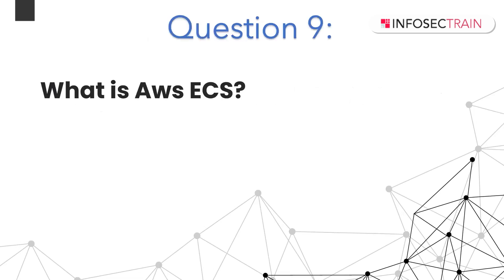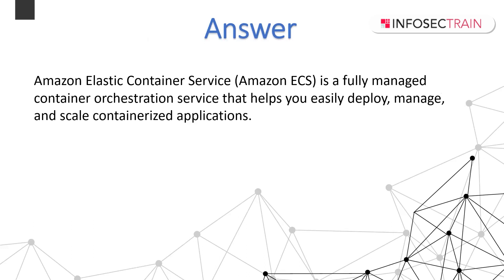What is AWS ECS? ECS stands for Elastic Container Service and it is a fully managed container orchestration service that helps you easily deploy, manage, and scale containerized applications. It deeply integrates with the rest of the AWS platform to provide a secure and easy-to-use solution for running container workloads in the cloud and on your infrastructure with Amazon ECS Anywhere. Amazon ECS leverages serverless technology from AWS Fargate to deliver autonomous container operations, reducing time spent on configuration, patching, and security. Instead of worrying about managing the control plane, add-ons, and nodes, Amazon ECS enables you to rapidly build applications and grow your business.